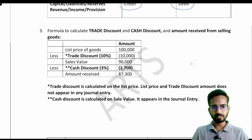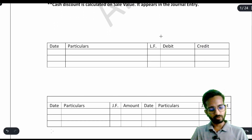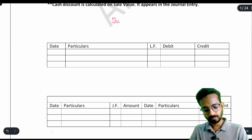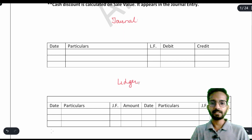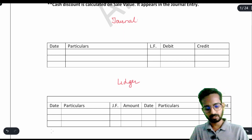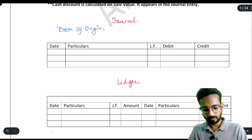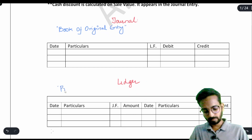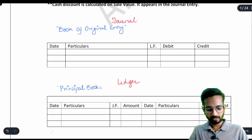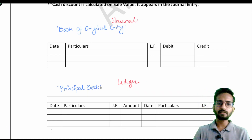We will learn trade discount and cash discount as they come up in questions. The two main things to learn today are: first, journal, and second, ledger. Both are books — journal is a book of original entry, and ledger is a principal book.